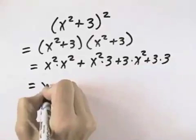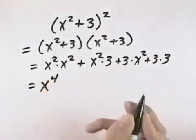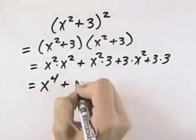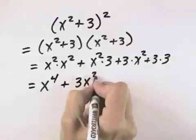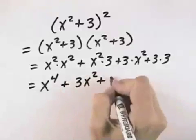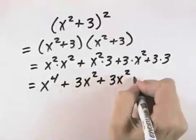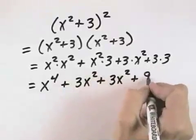So x squared times x squared would be x to the 2 plus 2, which is 4. x squared times 3 would be plus 3x squared, plus again 3 times x squared is 3x squared, plus 3 times 3 is 9.